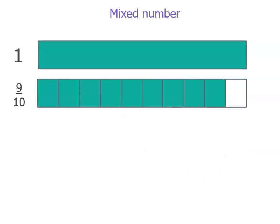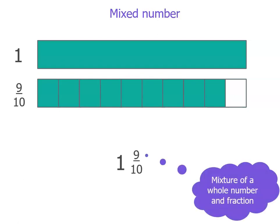We can express that same value as a mixed number, because 10 tenths is the same as 1. So we could write the number as 1 and 9 tenths. A mixed number is a mixture of a whole number and a fraction — that's how I remember what a mixed number is.